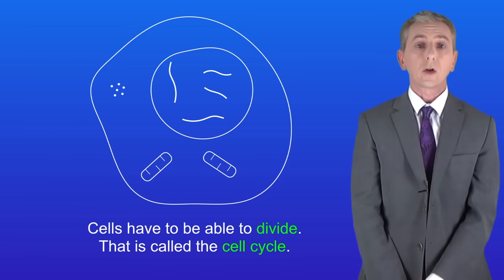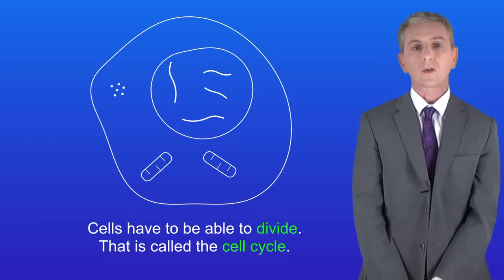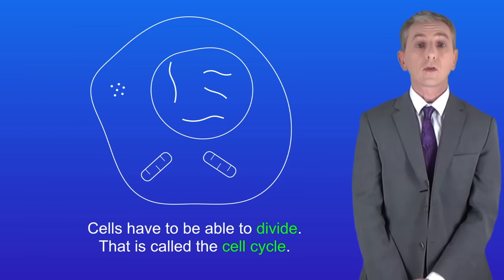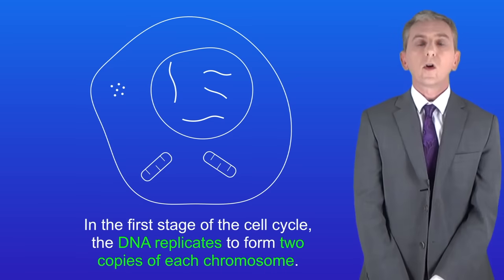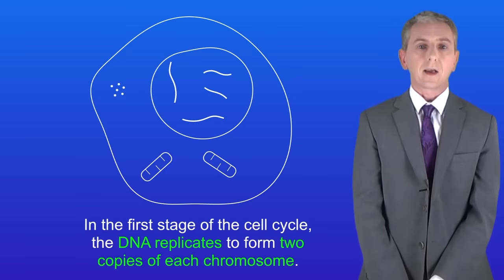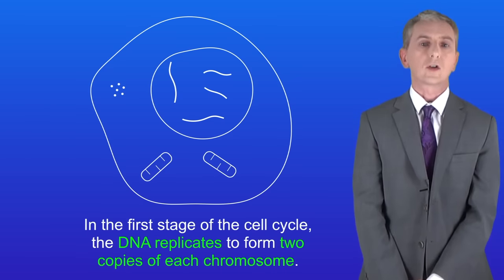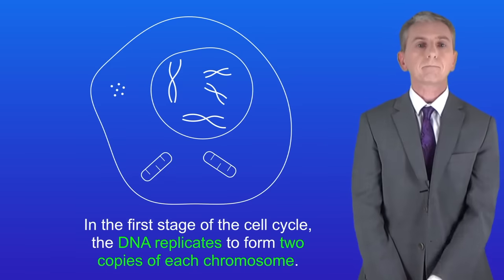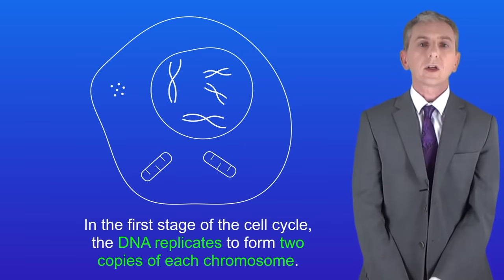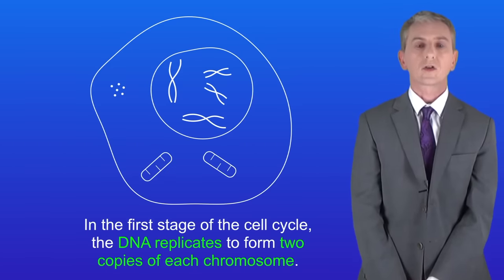The cell cycle including mitosis consists of three main stages, and you need to learn these. In the first stage of the cell cycle, the DNA replicates to form two copies of each chromosome, as shown here. The chromosome and the copy remain attached.